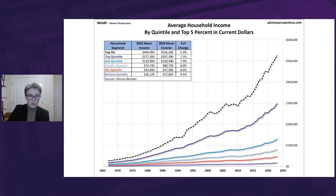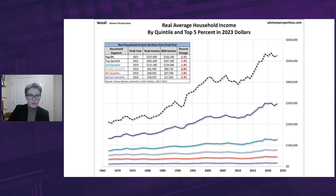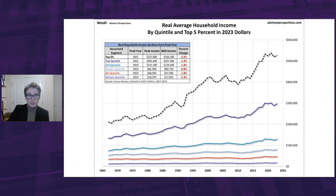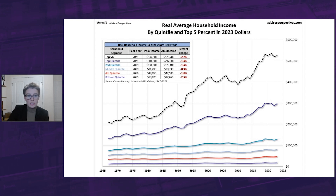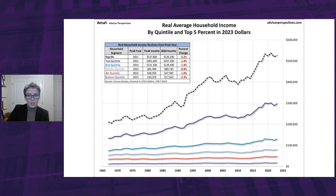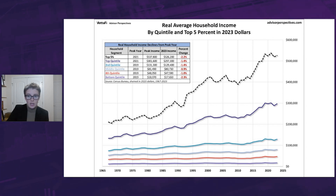But we can't just ignore inflation. Our next chart adjusts for inflation and changes to 2023 dollars — in other words, the incomes in earlier years have been adjusted upward to the purchasing power of the dollar in 2023. Even after adjusting for inflation, all groups saw increases in 2023 from the previous year, although not as large. However, the average household incomes are no longer at their all-time highs like we saw in the previous chart. All cohorts hit record highs in 2019, and then the top quintile and top 5% hit new all-time highs in 2021.